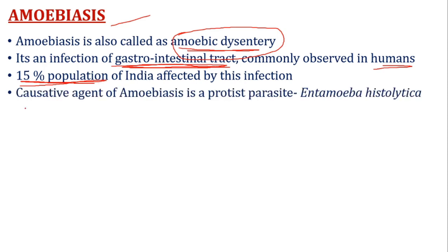The causative agent of Amoebiasis is Entamoeba histolytica. The genus is Entamoeba and the species is histolytica. It is a protist, a protozoa. Entamoeba means intestinal infection. Histolytica — 'histo' means tissue and 'lytic' means lysis — so it means intestinal tissue breakdown.